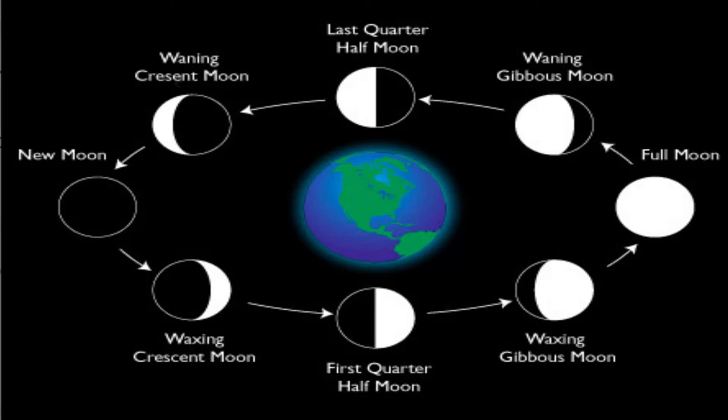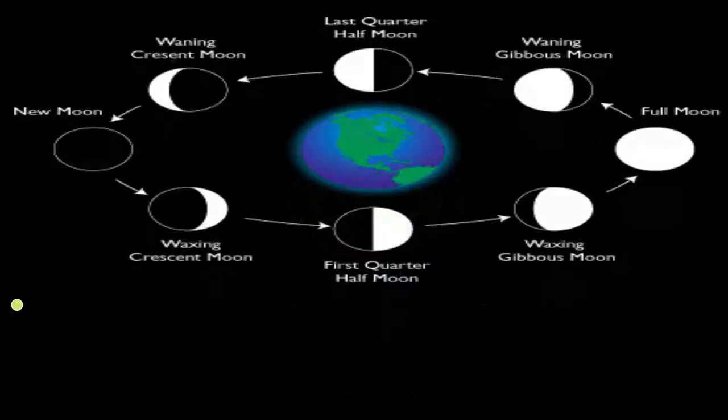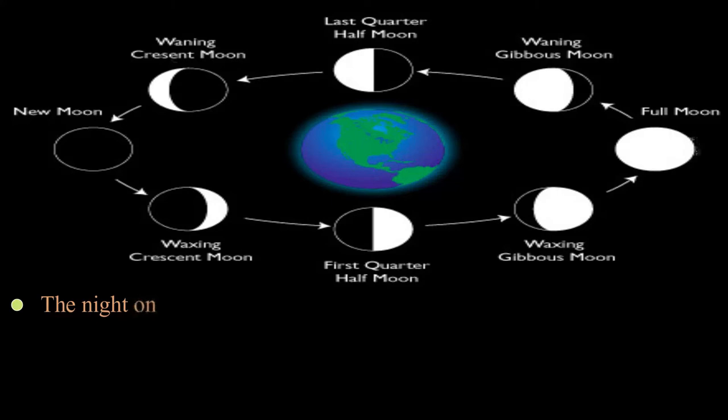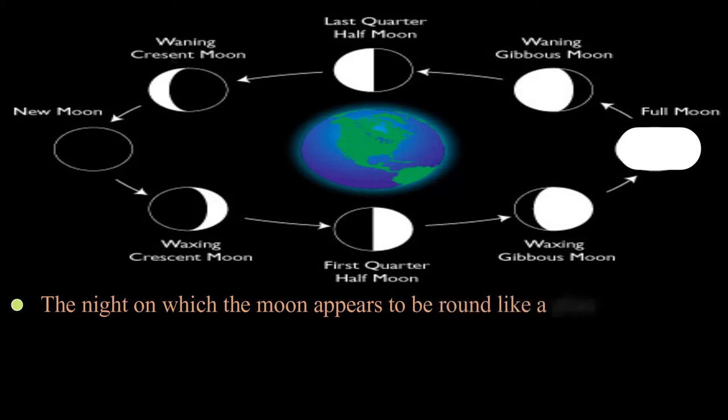The Full Moon and the New Moon appear only once in a month. The night on which the entire face of the Moon is illuminated by the Sun's rays and appears to be round like a plate is called the Full Moon, yani Purnima.